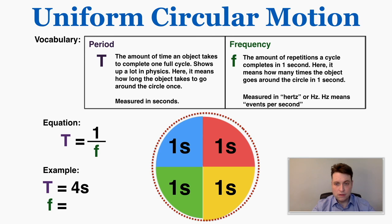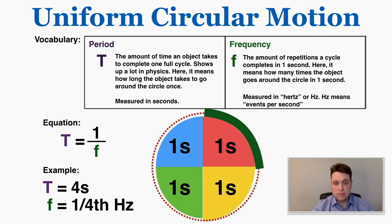The frequency is the amount of repetitions completed in one second. Looking at the visual, in just one second, one-fourth of the total circle has been covered — so the circle is being covered at one-fourth rotations per second, meaning the frequency is one-fourth. No matter what fraction you choose, the period is always equal to one over the frequency. So if you have the period of some circular motion, you also have the frequency.